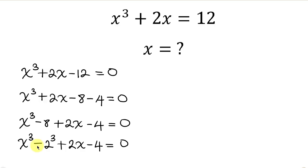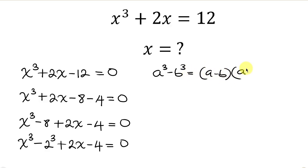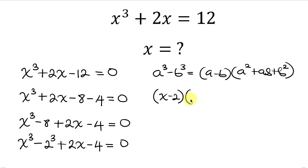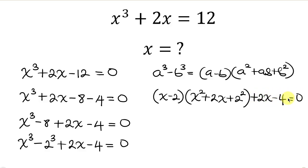Notice that x cubed minus 2 cubed is a difference of two cubes. The difference of two cubes formula states that a cubed minus b cubed equals (a minus b)(a squared plus ab plus b squared). So x cubed minus 2 cubed can be written as (x minus 2)(x squared plus 2x plus 2 squared), plus 2x minus 4, equal to 0.